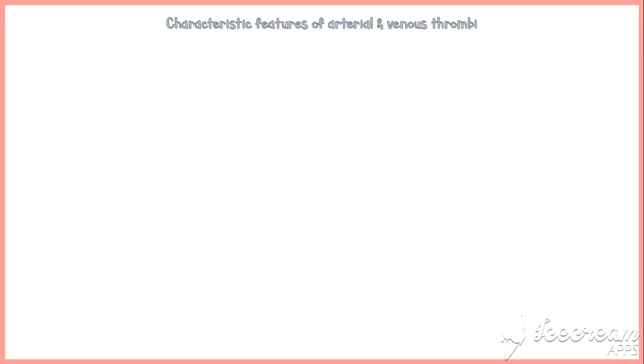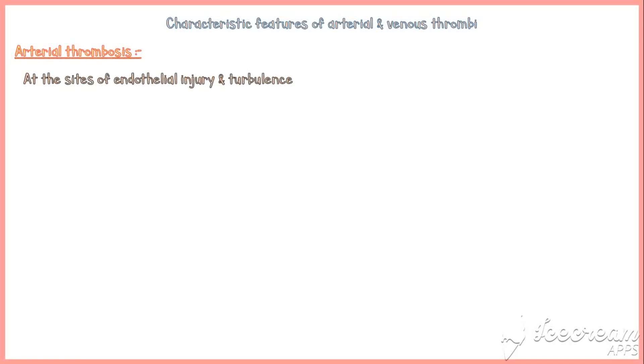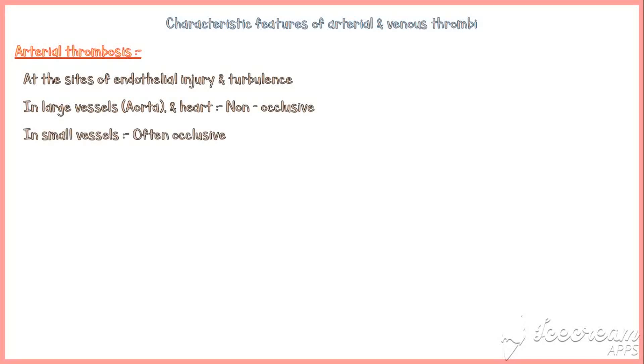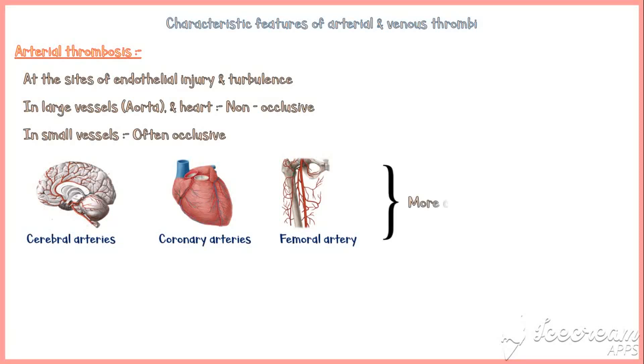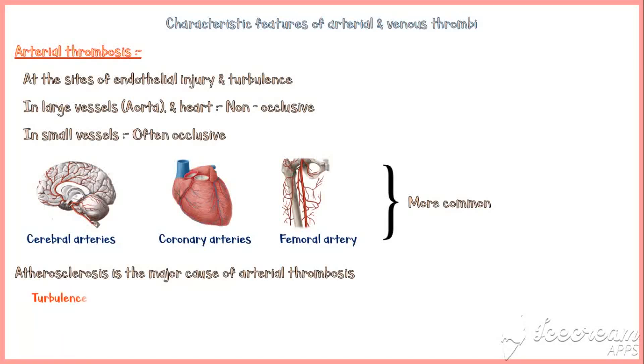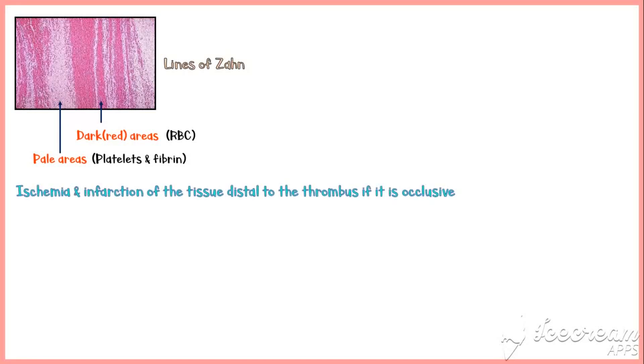Arterial thrombosis usually occurs at the sites of endothelial injury and turbulence. Arterial thrombi in large vessels such as the aorta and heart are non-occlusive, but small vessel thrombi are often occlusive. Commonly involved arteries include cerebral, coronary, and femoral arteries. Atherosclerosis is the major cause of arterial thrombosis. Arterial thrombi show characteristic alternating bands of pale and dark areas called lines of Zahn — pale areas represent platelets and fibrin, dark areas represent red blood cells. The more common clinical manifestation is ischemia and infarction distal to the thrombus.